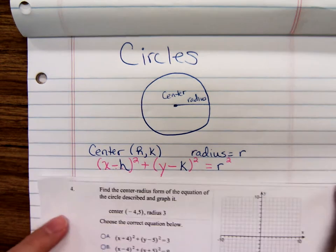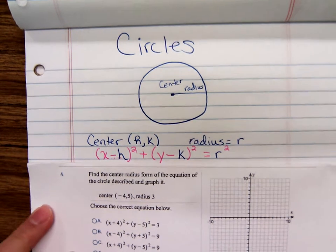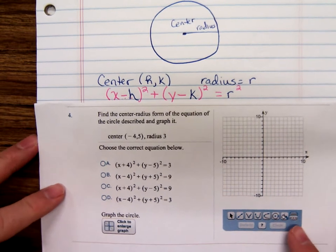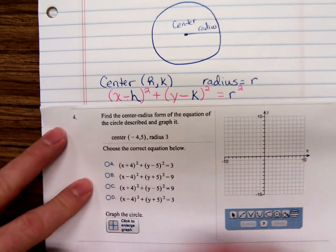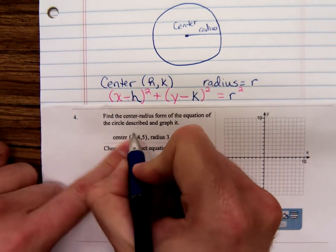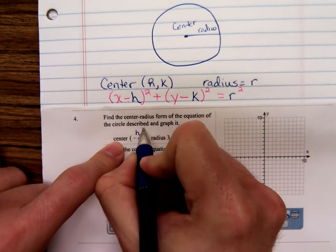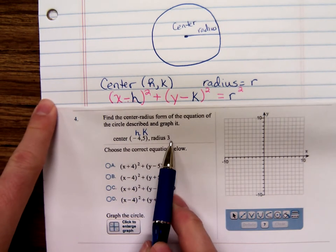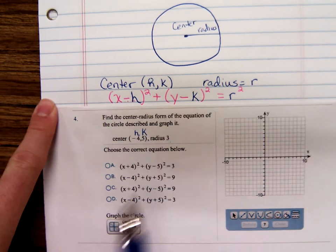I'm going to do number four. The center is negative four, five, and the radius is three. I'm going to write the equation.